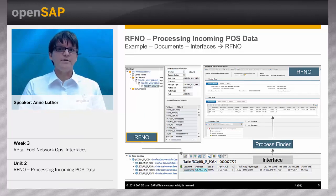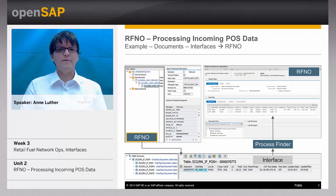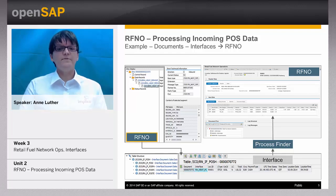Here you find the documents of the first steps of the incoming data process. In our example, we start with an IDOC. An interface processes the IDOC and creates one or more interface documents. The subsequent process of an interface document starts the process finder, which determines the business transaction. In our example, the business transaction named 'sale of agency goods with cash payment' is determined, because the incoming payment type is cash, the location type is SDCD, and the business type is agency.